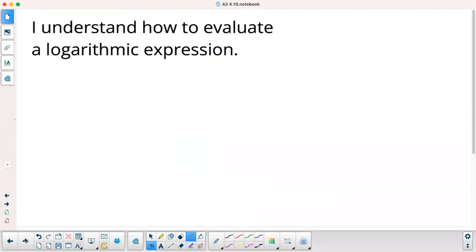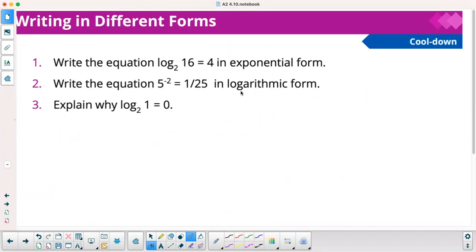Our goal, I understand how to evaluate a logarithmic expression. Hopefully, you met that goal today. And then our cool down here. Log base 2 of 16 equals 4 in exponential form. 2 to the 4th equals 16. Logarithmic form. Log base 5 of 1 over 25 equals negative 2. And explain why log base 2 of 1 equals 0. I'd say 2 to the 0 equals 1. And obviously, 2 to the 0 is 1. 1 is equal to 1. So I would say yes.